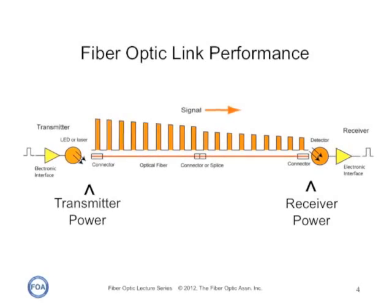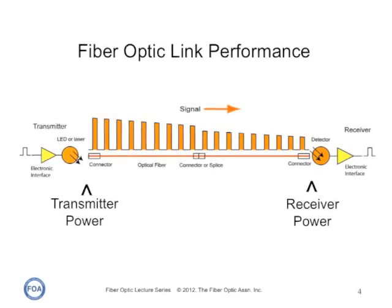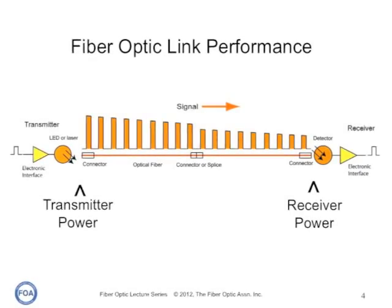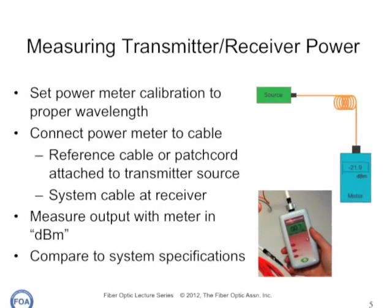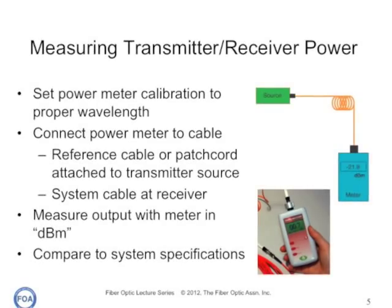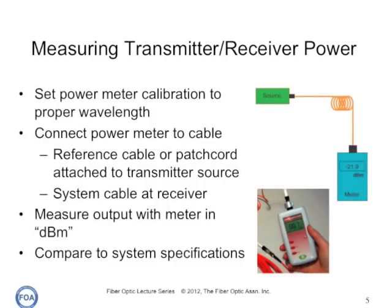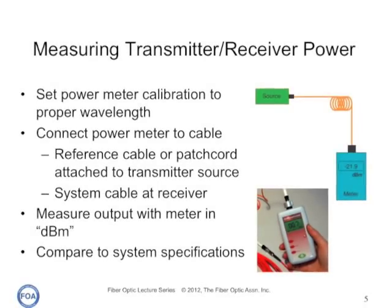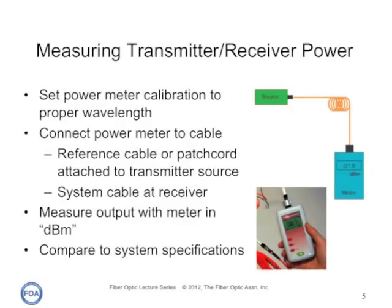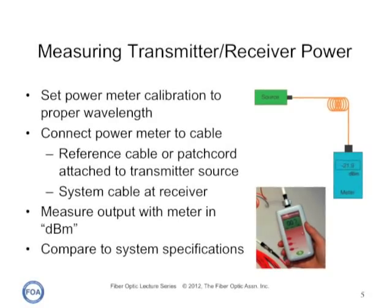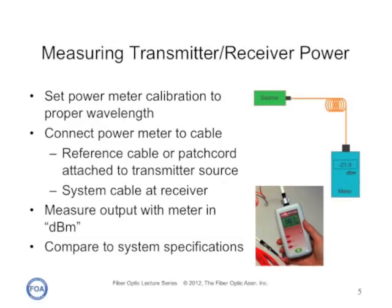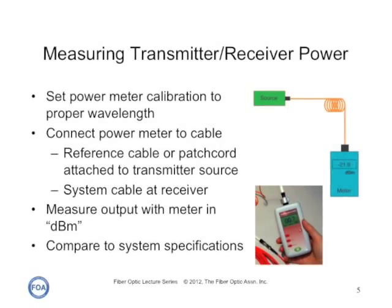What we're interested in, in this link, is the amount of power at the transmitter and the amount of power at the receiver. When we're measuring transmitter or receiver power, we use an optical power meter calibrated to the proper wavelength. We'll measure the power from a transmitter by attaching a reference cable or patch cord and measuring the output of that short cable. At the receiver, we'll merely unplug the receiver cable, plug it into our power meter and make a measurement. We usually make this measurement in dBm — dB referenced to a milliwatt — and compare it to system specifications.